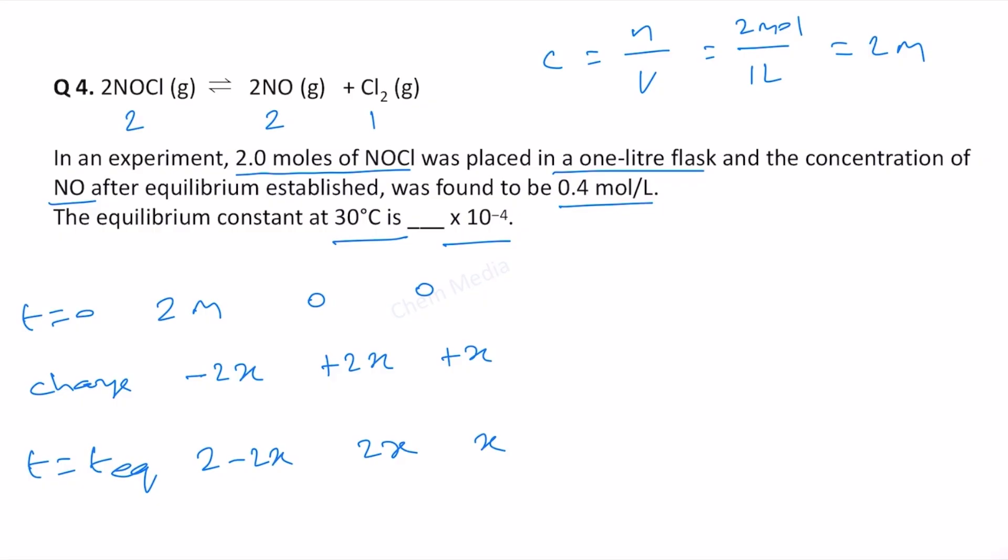Therefore from the ICE table we can find that the concentration of NO at equilibrium is equal to 2x which is given as 0.4 molar in the question.